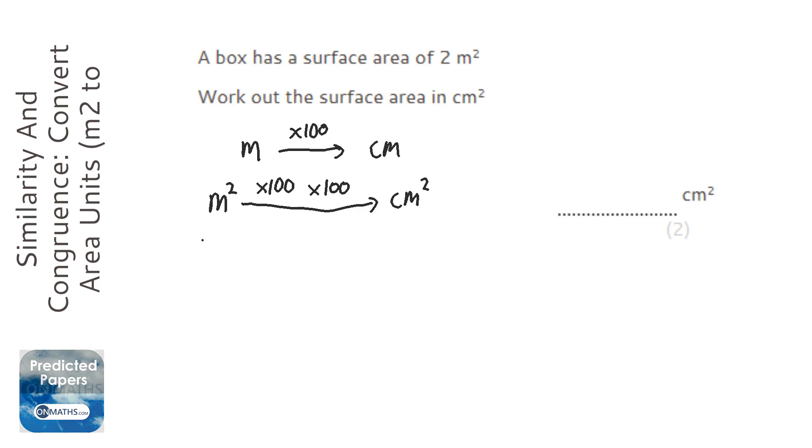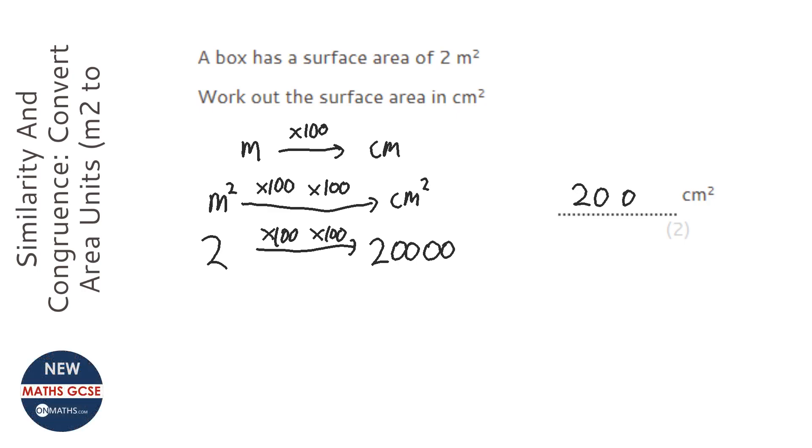So when we've got 2 metres squared and we times by 100 times by 100. So it's going to be 2 times by 100, we'll put two zeros at the end. We'll technically move the 2 to the left. And times 100 again we'll put another two zeros at the end. So it's going to be 20,000.